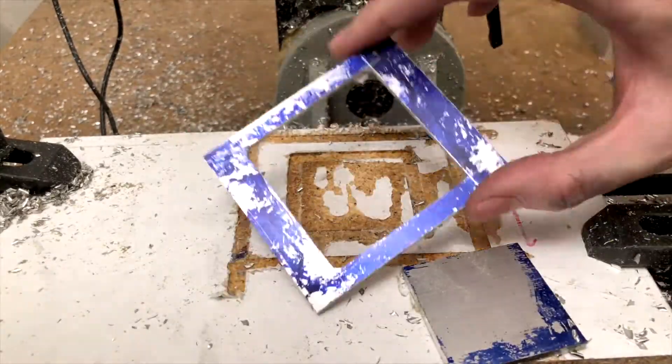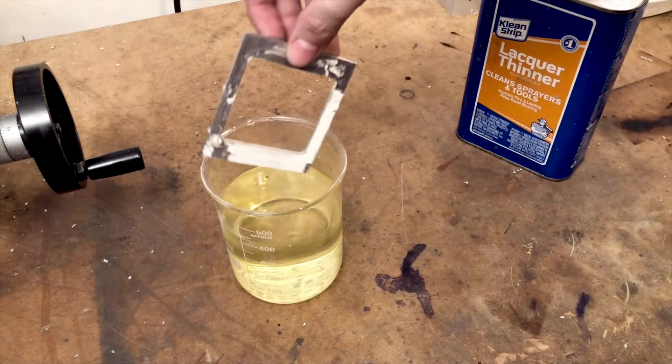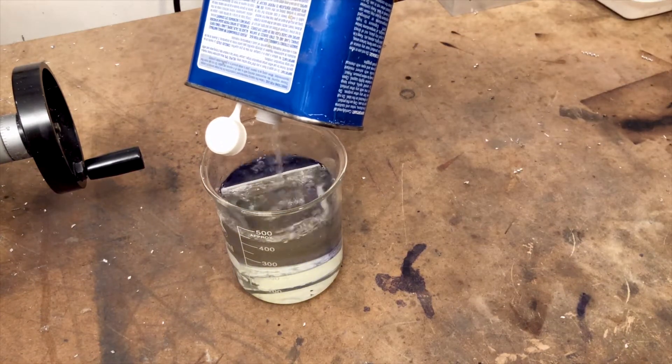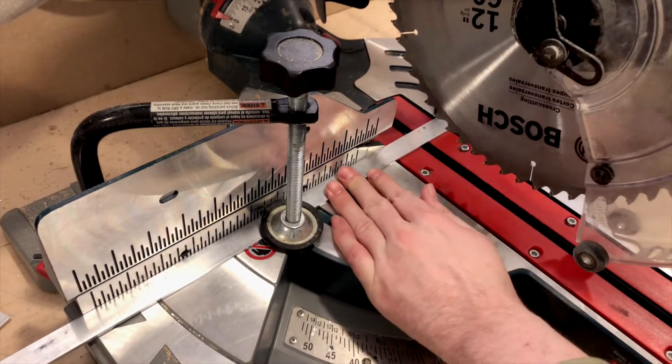With the part now cut, I pop it off and stick it in a bath of lacquer thinner to help remove the marking fluid and the glue. This is going to take a while, so while I wait, I grab a few pieces of three-quarter inch aluminum and cut them to match the size of the frame I just made.